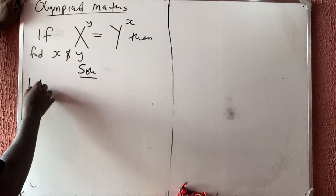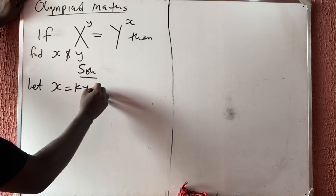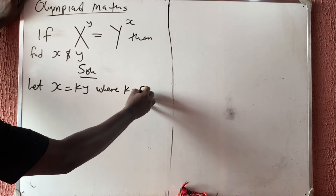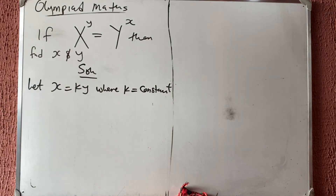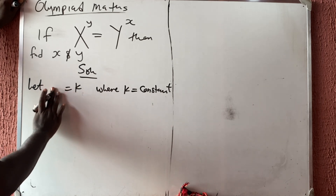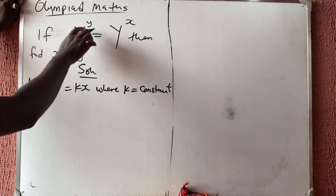What we do here is let x be equal to ky, where k is any constant — constant means any number. Now, wherever we see x we can substitute ky, or equivalently let y be equal to kx. Either way you will get the same answer, so let's proceed with y = kx.